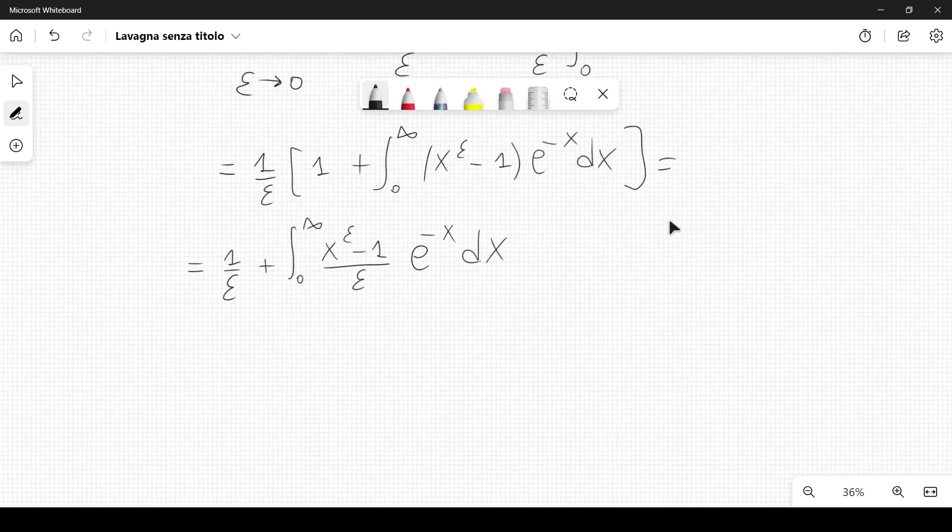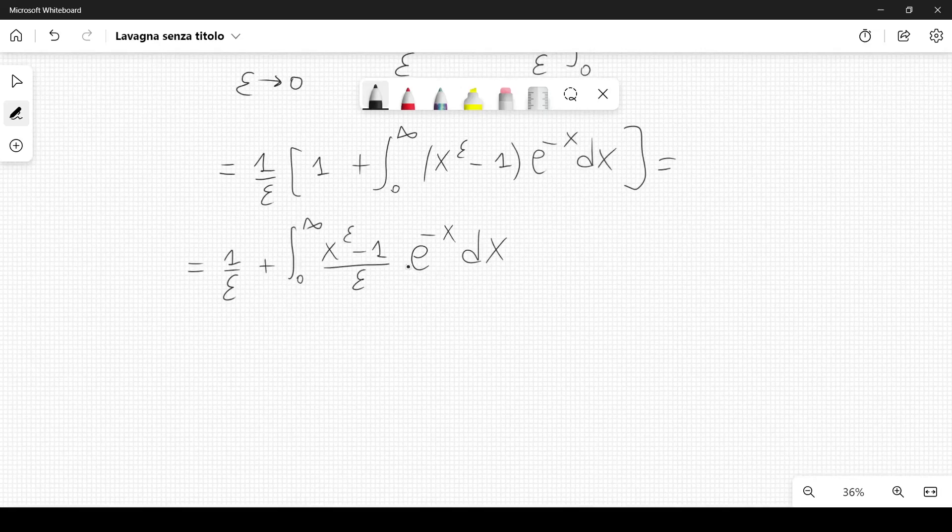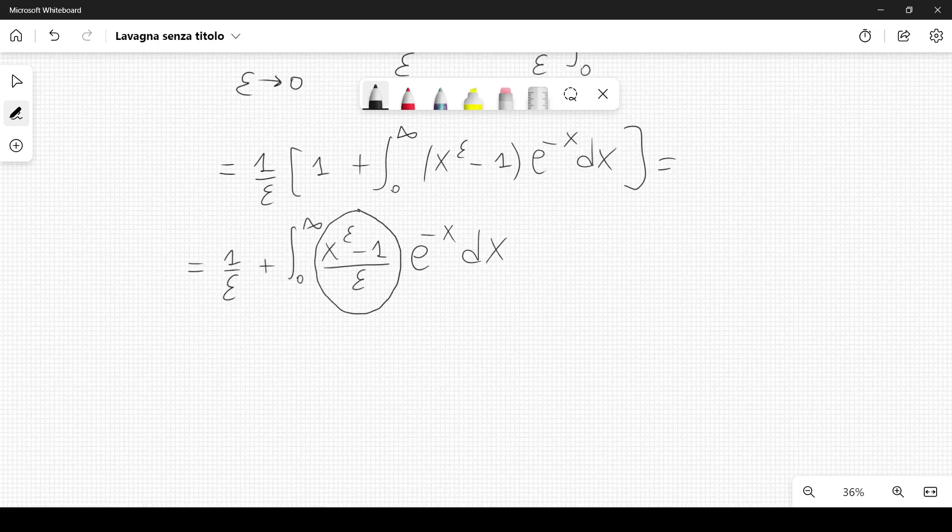Now I can let epsilon go to 0. If you use L'Hospital's rule here, you would take the derivative of the numerator and denominator to calculate the limit as epsilon goes to 0, because both go to 0 as epsilon goes to 0.